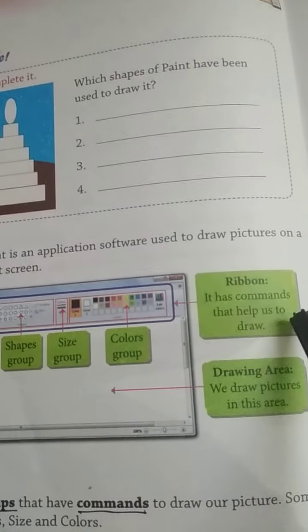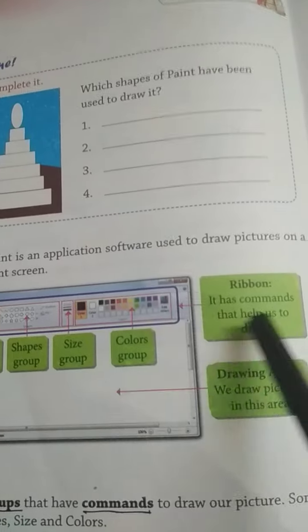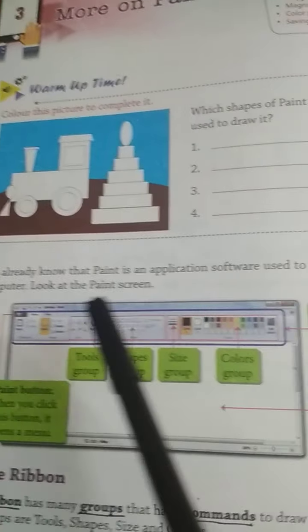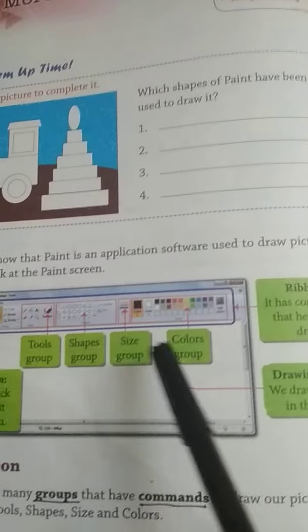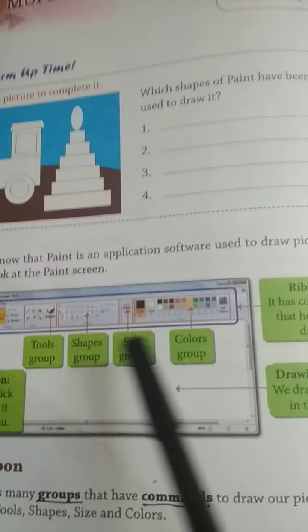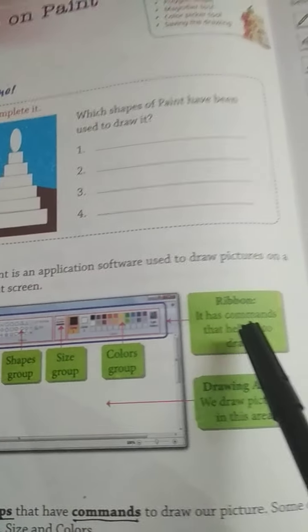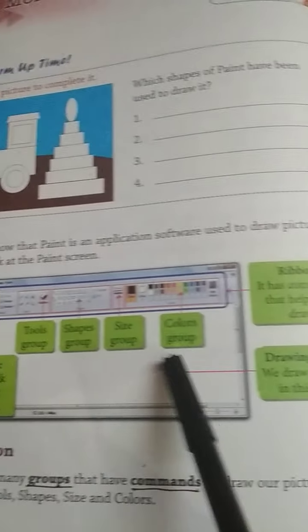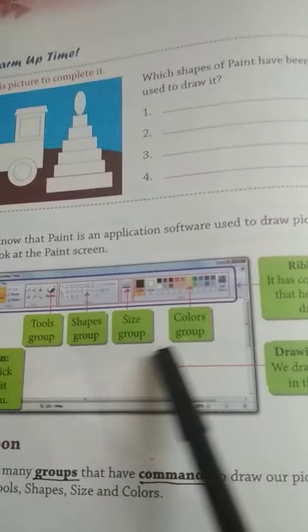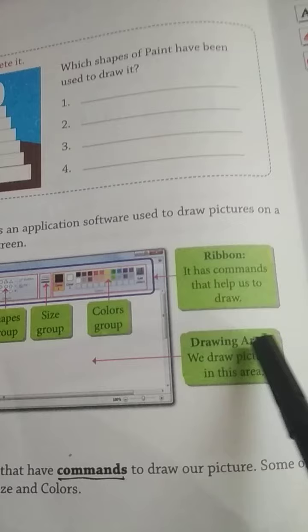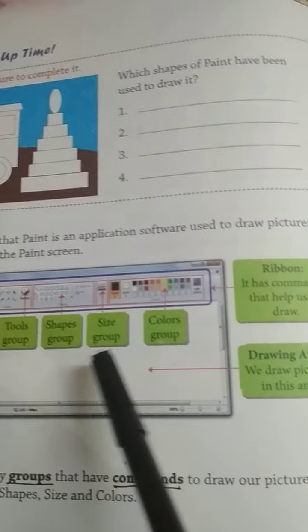Ye jo ribbon hai — it has commands that help us to draw. Ribbon aapko purple color ka dikhta hai, aur iske andar ye saare groups aate hain. To ye ho gaya ribbon. Ab ye hai aapka white area — drawing area ko kehte hain. We draw pictures in this area.